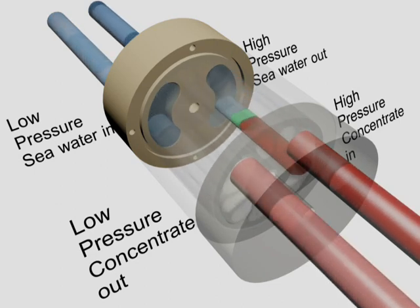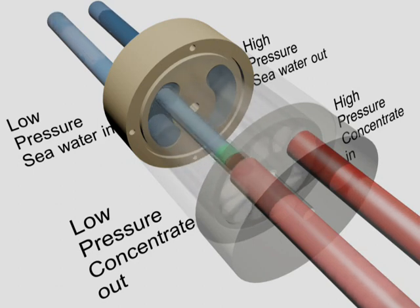Spent concentrate leaves the rotor at low pressure, pushed out by fresh seawater. The rotor is turned by the flow itself, spinning at approximately 1200 rotations per minute.